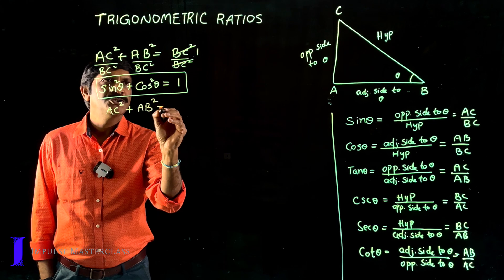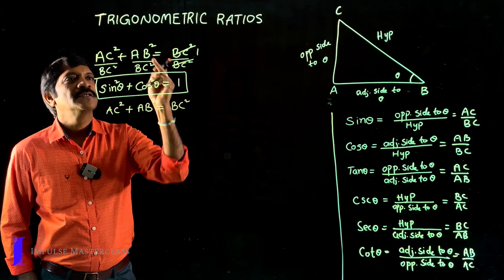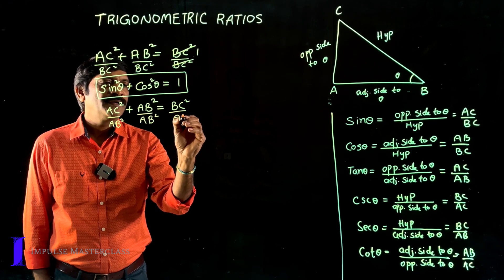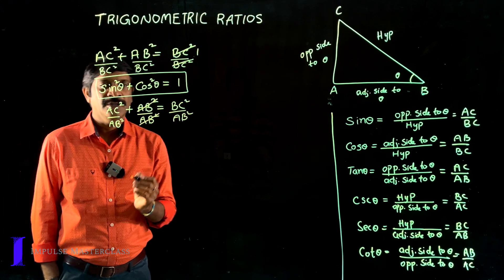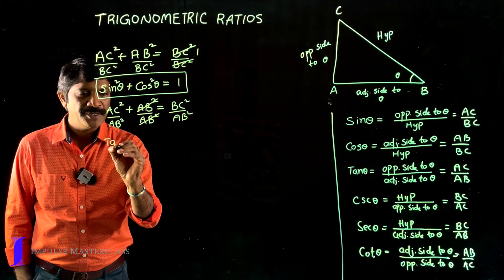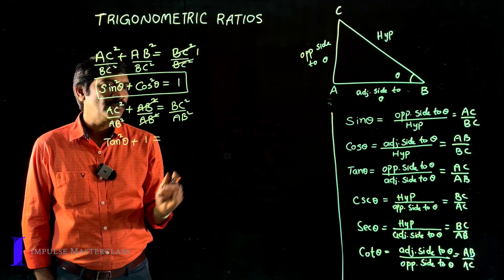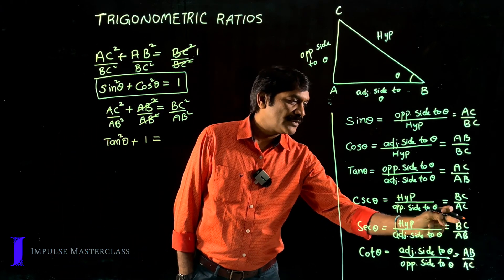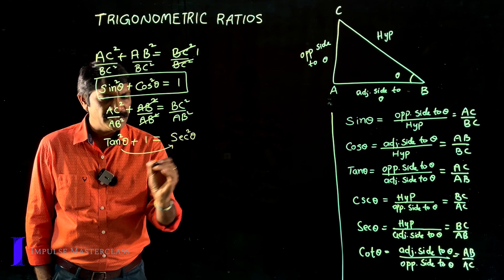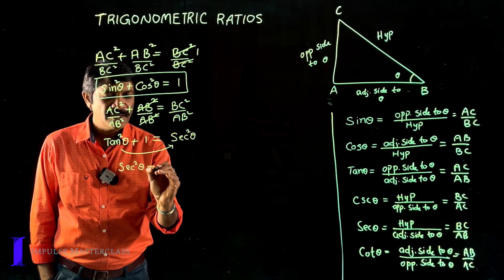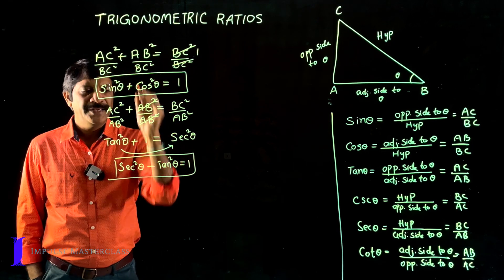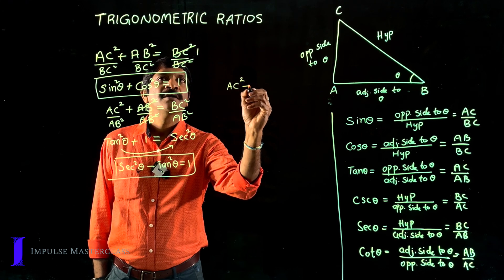Similarly, taking the Pythagorean theorem AC² + AB² = BC² and this time dividing both sides by AB², AB² cancels. We observe that AC/AB is tan θ, giving tan²θ, and BC/AB is secant θ, giving sec²θ. So tan²θ + 1 = sec²θ, which rearranges to: sec²θ − tan²θ = 1.